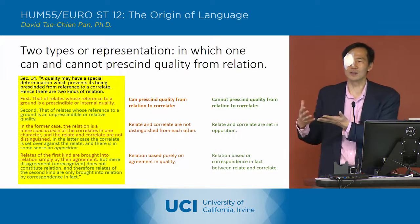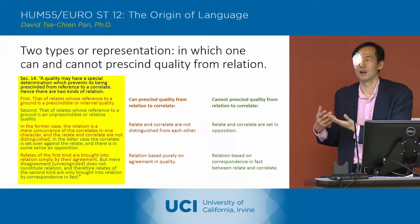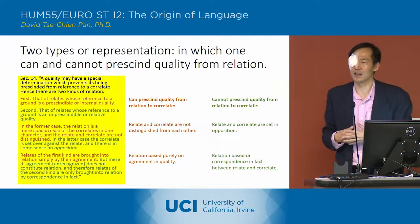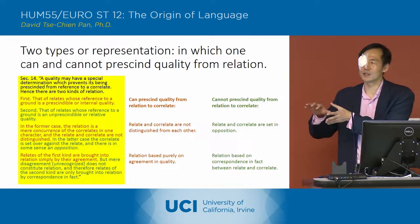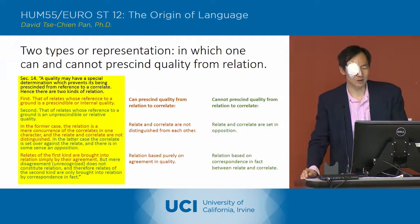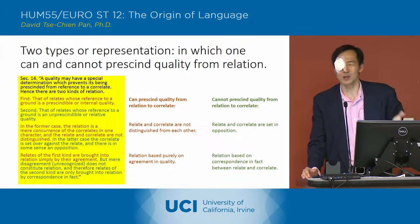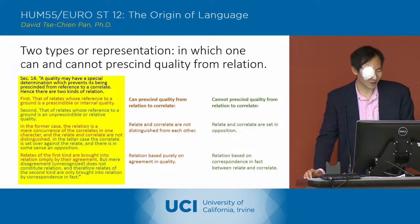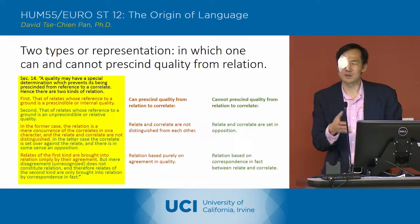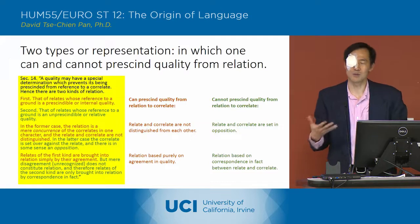When you do that, you end up with three types of representation — or three types of general signs — that he then describes in the last section. So if you prescind quality from relation and interpretant, you get one type of sign. This is what he's laying out in section 14, and we can break it up into two types of representations to start.